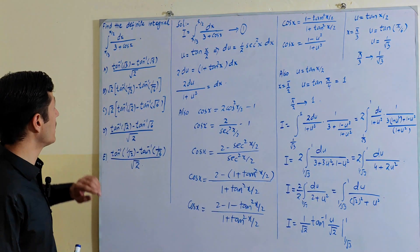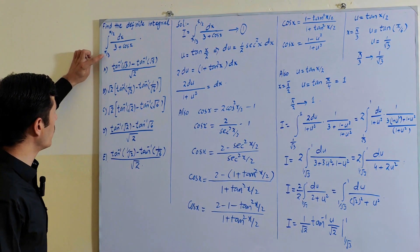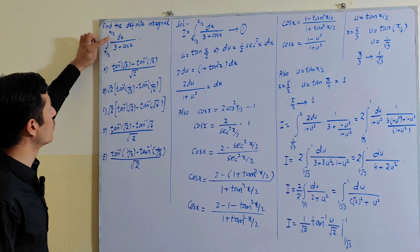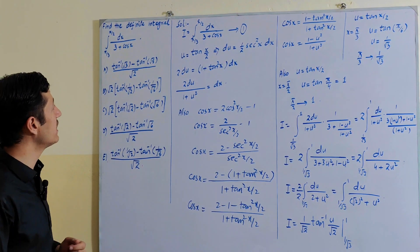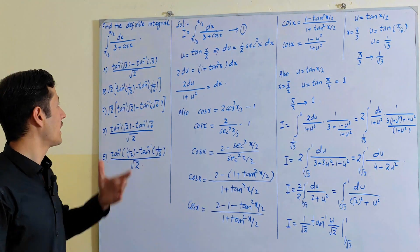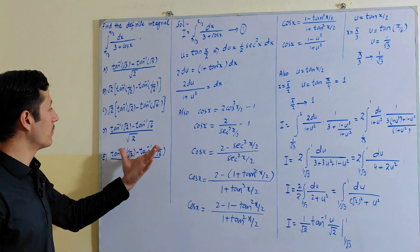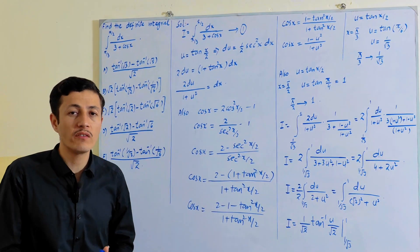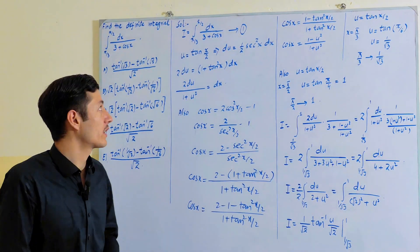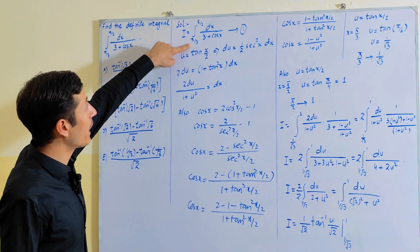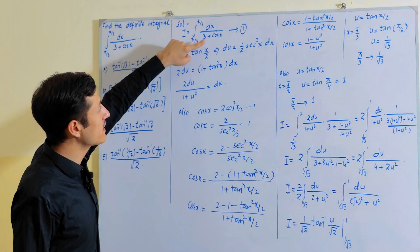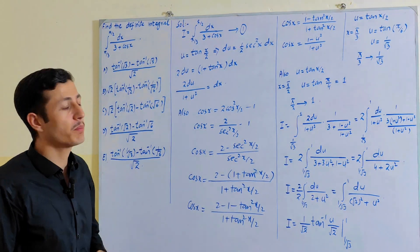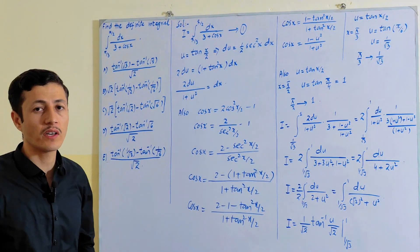Find the definite integral from lower limit π/3 to upper limit π/2 of dx divided by 3 plus cos(x). The options are available, so let's try to solve the given definite integral: integral from π/3 to π/2 of dx divided by 3 plus cos(x).